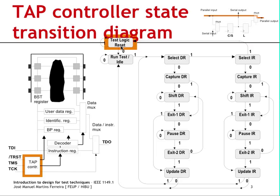Starting from the test logic reset state, all boundary scan cells will be in transparent mode, meaning the circuit operates in its normal mode. This is also the state that automatically loads the bypass instruction, and this is how the device operates at power-up.